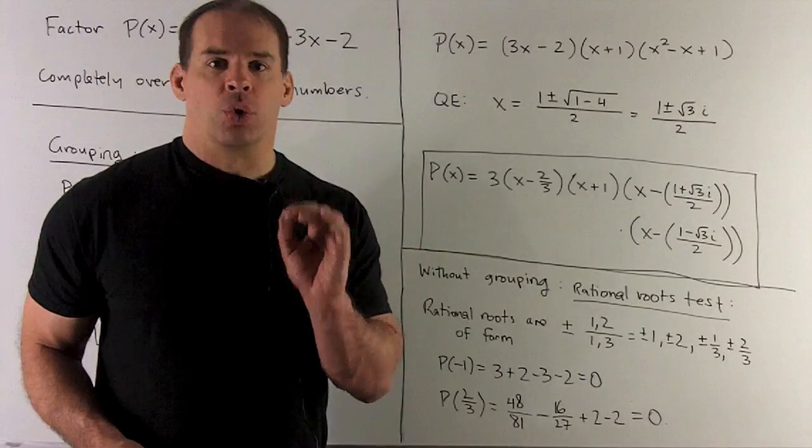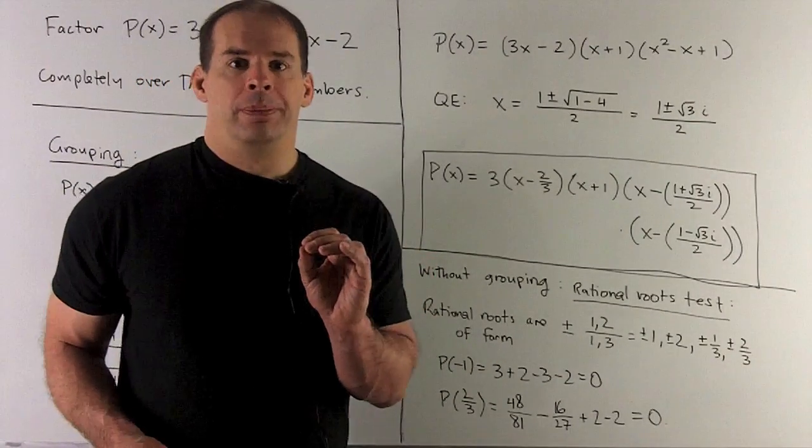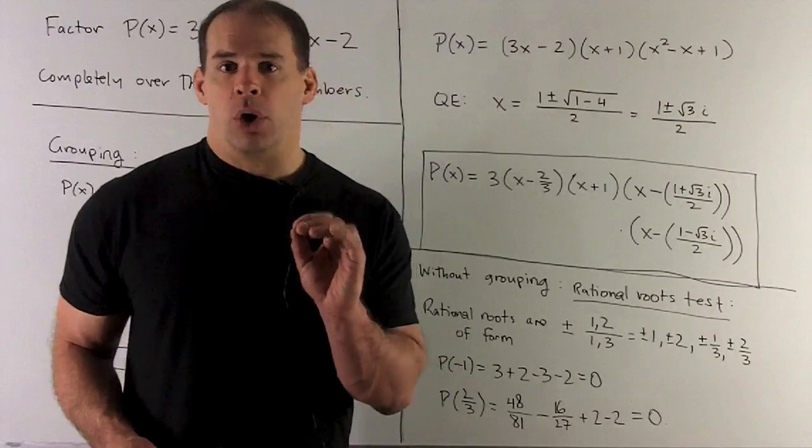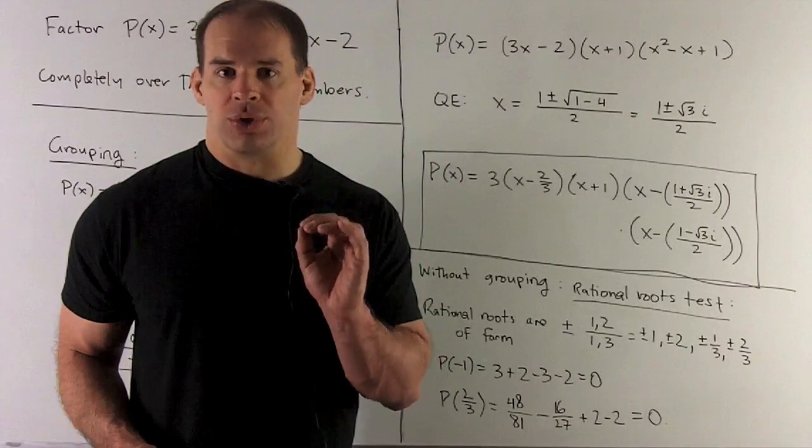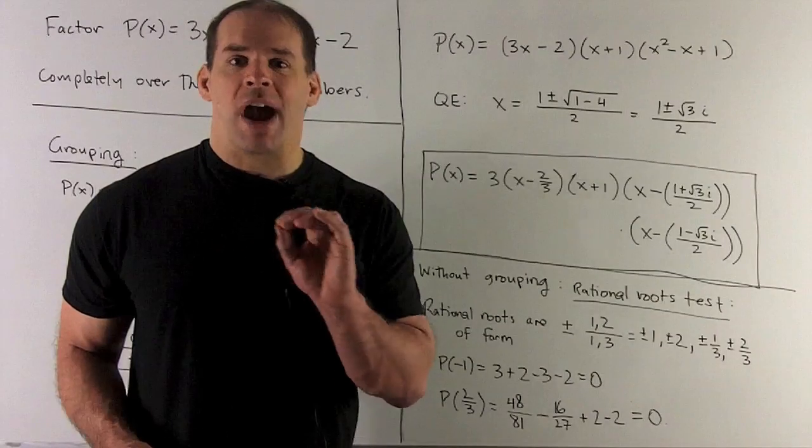Now, if you missed the grouping trick, what can you do? If you notice, our polynomial has all integer coefficients, so we can appeal to the rational roots test. So if there's any rational roots at all, they're going to have to appear in a certain form.